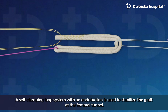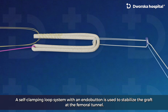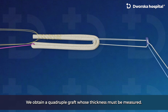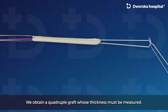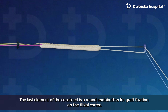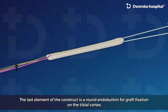A self-clamping loop system with an endo button is used to stabilize the graft at the femoral tunnel. We obtain a quadruple graft whose thickness must be measured. The last element of the construct is a round endo button for graft fixation on the tibial cortex.